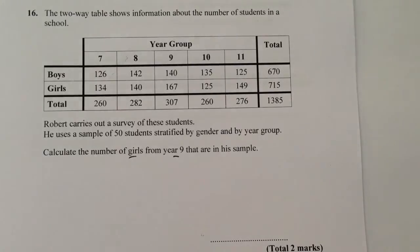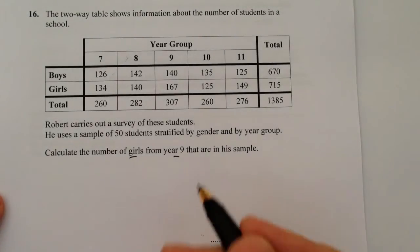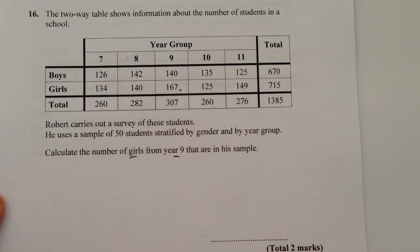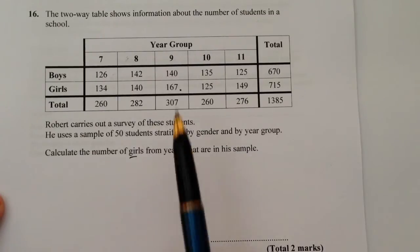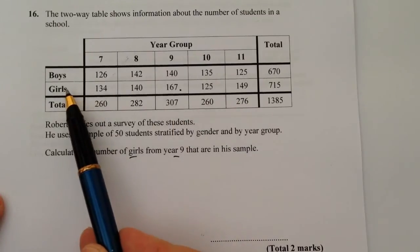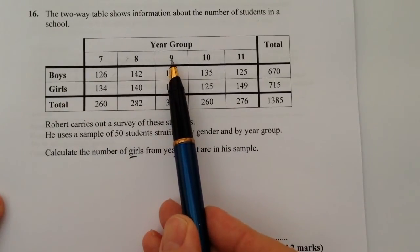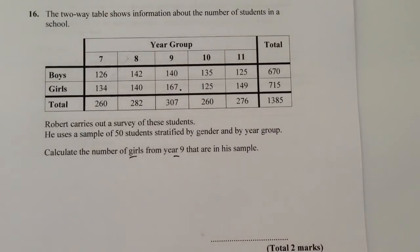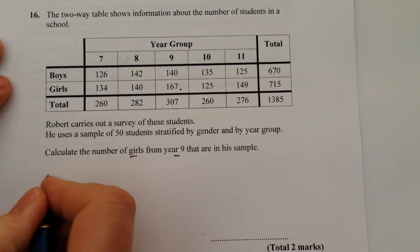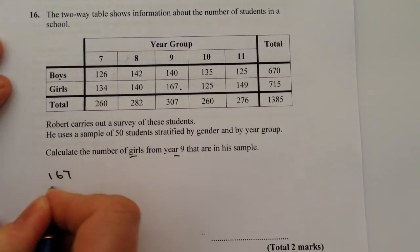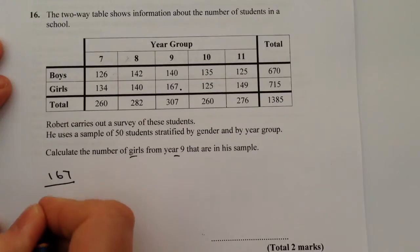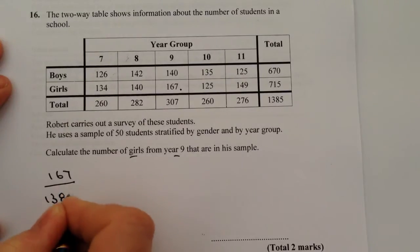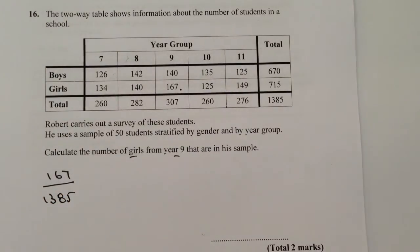They've given us quite a lot of information here, but we do know that there are 167 girls in year 9 out of the 1,385 students within the school. So we've got 167 out of 1,385 students — that's basically the fraction.